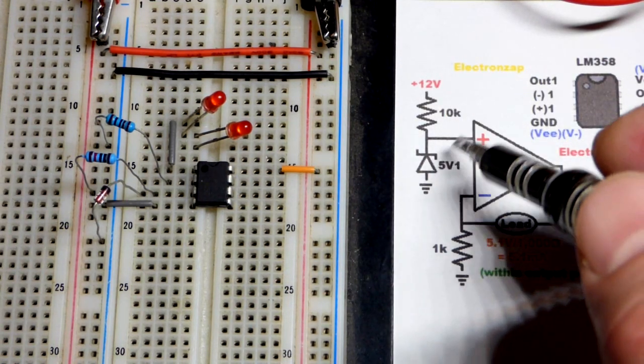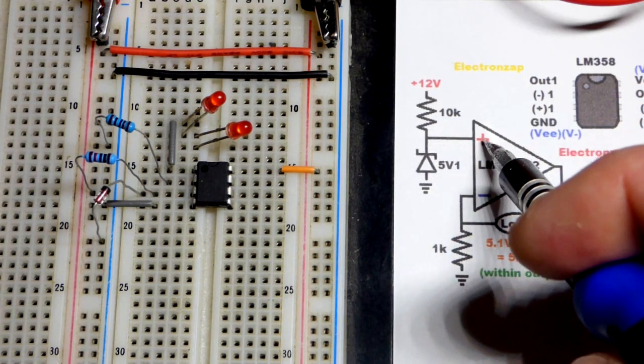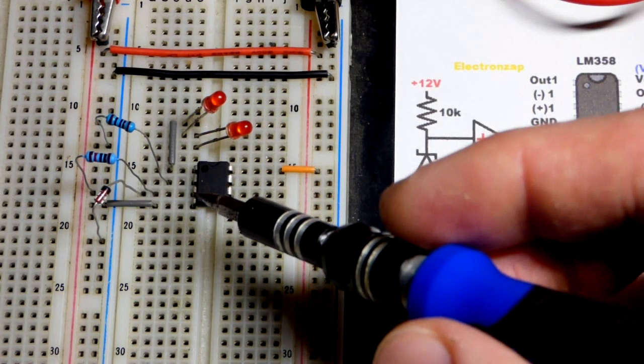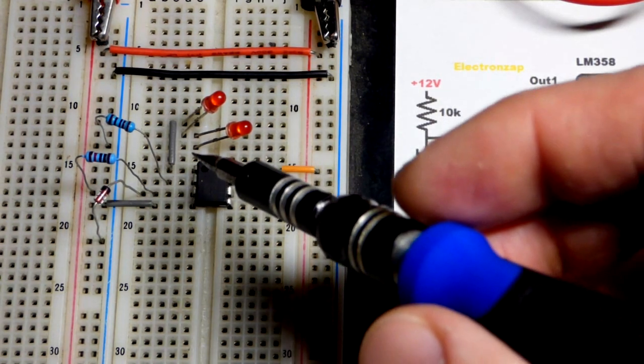And we have a zener diode setting about 5.1 volts to the non-inverting input. So the non-inverting input is below the inverting input. Output is on top.